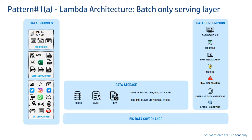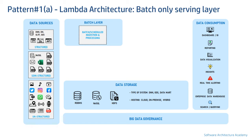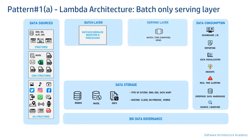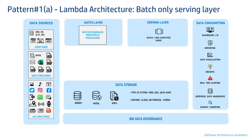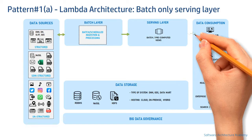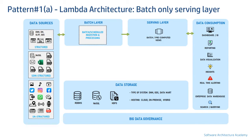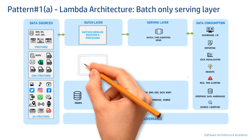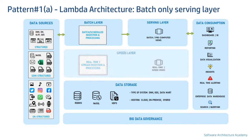We will begin by discussing three Lambda architecture patterns. The first variant is batch only with a serving layer. In this, there is a batch layer which ingests data and computes values, followed by a dedicated serving layer where the computed outputs of the batch layer are written. The consumption layer reads from this serving layer.